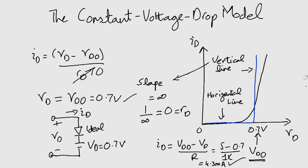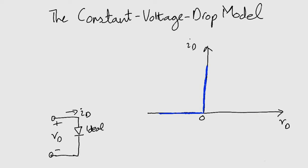These values are not too different from the ones we calculated in the previous lesson. However, if the voltages are much greater than 0.7 volts, we may drop the voltage drop completely and use just an ideal diode. Look at the figure on your bottom left again. Here, vd equals 0 volts. Id is given by this equation, which results in a value of 5 milliampere, using values of vdd and r from the example in the previous lesson.